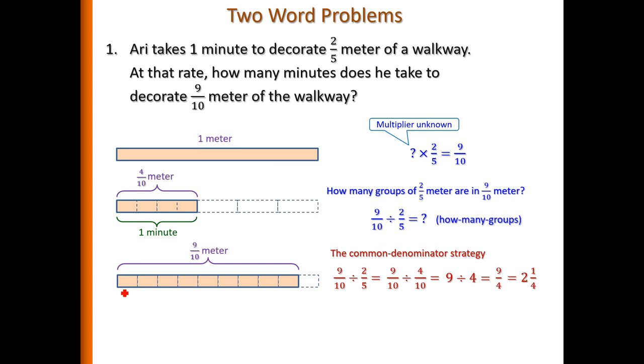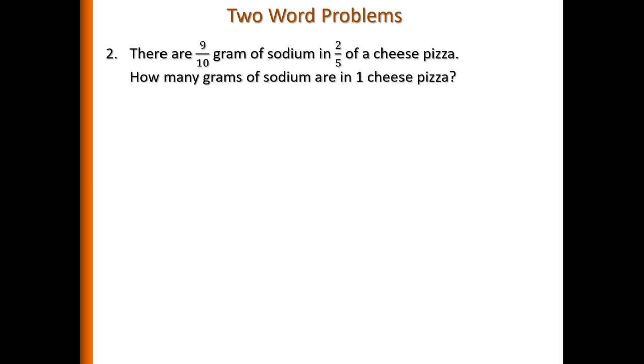If you take a look, every four-tenths, it will take one minute. And another four-tenths, another one minute. The last one-tenth meter will only take a quarter of the minute. So that's why it's two and a quarter. Now let's consider the second problem. This problem is different and it's also modeled differently.